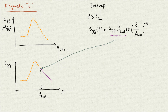We can use the JONSWAP spectrum or the TMA spectrum. JONSWAP is more suitable for deep water, while TMA is more suitable for shallow water. The N value is typically 5 for deep water and 3 for shallow water, and it can be in between for transitional conditions. By doing this, when our high-frequency data is missing or not acceptable, we can replace it with the tail of one of these known empirical water spectra.